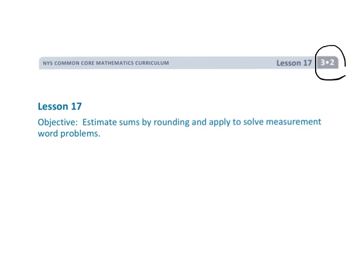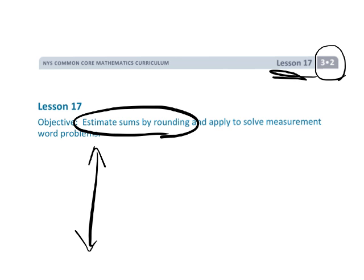All right, this is grade 3 module 2 lesson 17 and we're going to be estimating by rounding. And remember, we've initially started to learn how to round by using a number line, right? A vertical number line. We're going to do that in our head, but for the purposes of this video, we're just going to go boom, round straight away.